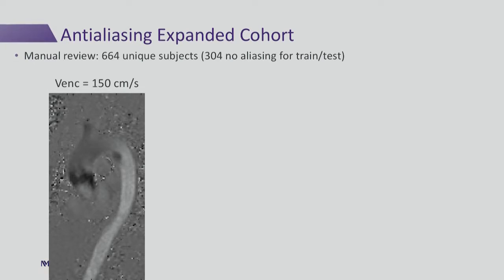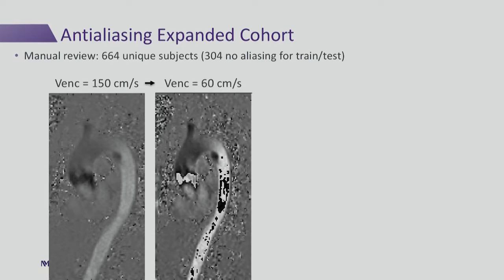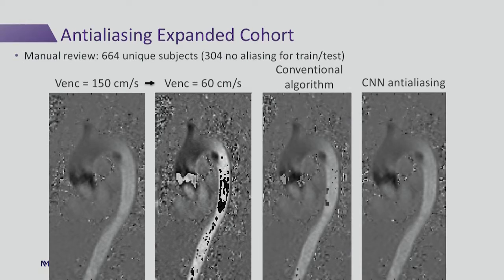More recent work is focused on expanding this cohort to adult patients as well. We looked at 664 unique subjects and found 304 with no aliasing for training and testing. We've trained the network again for this larger cohort. If we start with a VENC of 150 and reduce it to 60, we can heavily alias the dataset, and we can see much better performance with the CNN compared to the conventional algorithm.